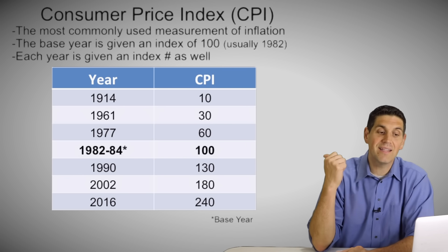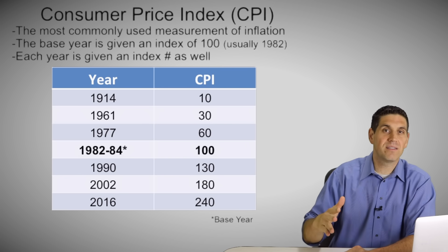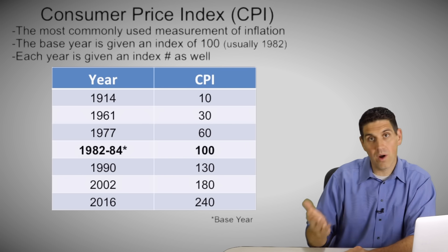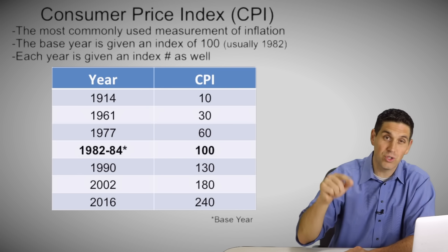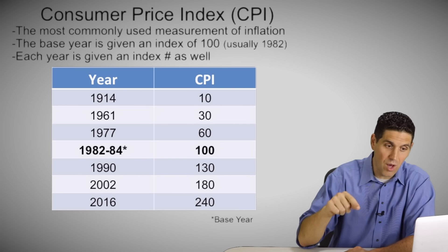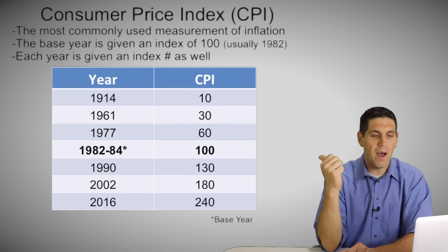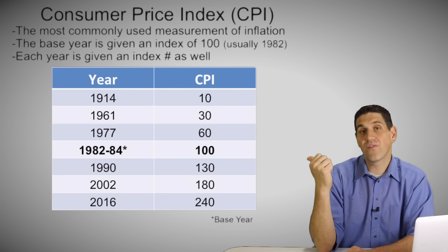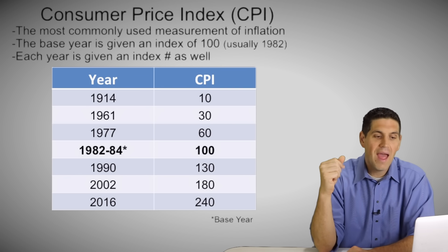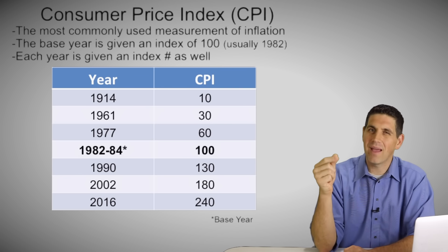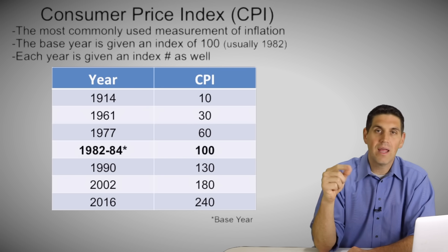It also goes the other way. In 1977, the CPI was 60 — if the number is less than 100, that means prices were lower than in the base year, in this case 40% lower. So CPI shows prices were 40% lower in 1977 than in the base year of 1982. A CPI of 30 for 1961 shows prices were 70% lower, and in 1914, a CPI of 10 shows prices were 90% lower than in the base year. Again, it's all about the base.